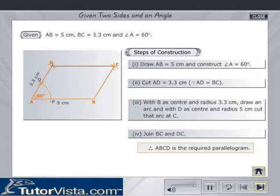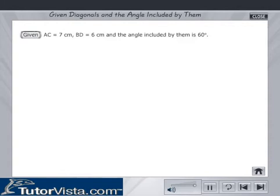Click on the home button or the next button to view the next type of construction. Construction of a parallelogram given the diagonals and the angle included by them. The data given is AC is equal to 7 cm, BD is equal to 6 cm and the angle included by them is 60 degrees. The steps of construction are as follows.